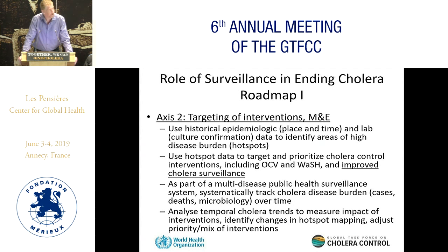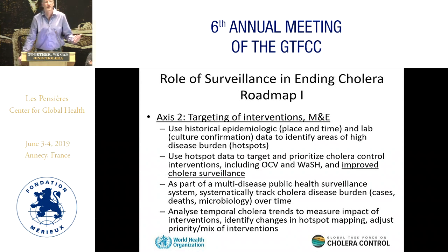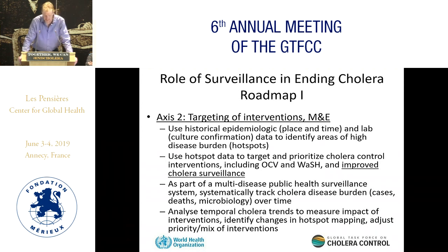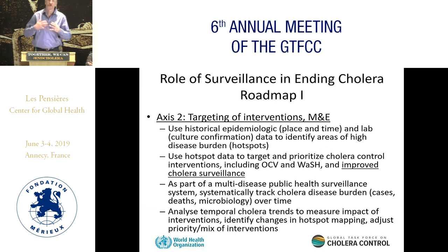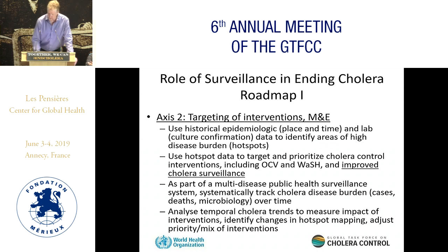The second role that surveillance plays is providing access to data — historic data, ideally weekly at the district level — to develop a map of your cholera burden and the high disease burden areas that represent hot spots. You use that mapping to target your OCV and WASH interventions, as well as improving cholera surveillance, to monitor and evaluate the impact of interventions and shift how you direct your response over time depending on observed impact.